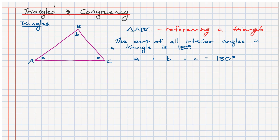Now if we wanted to reference these angles in a different way, for angle A we simply write the angle symbol and then stick the letter A in the middle with the other two letters on either side. This works the same for B as well as C. So that's just another way you might see angles being referenced.